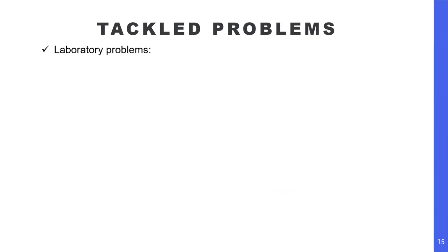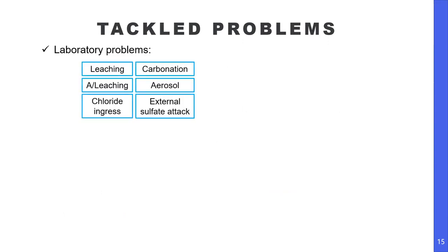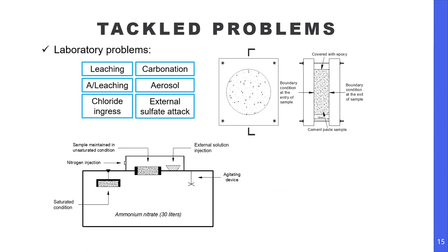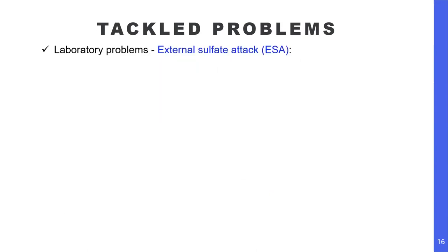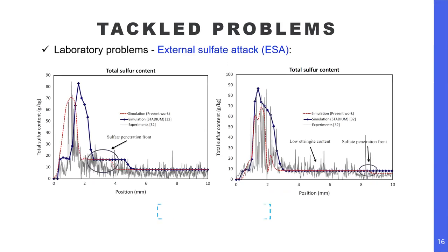Now let's look at some case studies I have achieved in the past few years. For laboratory problems, I have done numerical modeling of leaching, carbonation, alkali-silica leaching, aerosol attack, chloride attack, and external sulfate attack. In the modeling of external sulfate attack, as my research can take the cracking suction effect into account, the sulfate content and the sulfate layer are much better predicted — as you can see from the picture, the sulfate content and sulfate layer shown in the red dashed line are much better predicted by my approach.